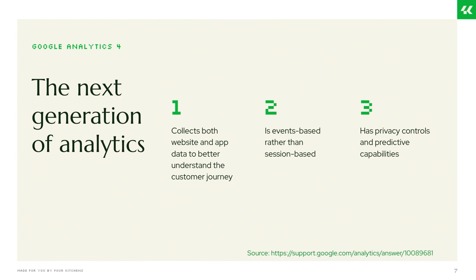Some key differences between Google Analytics 4 and the previous version: the new version — which Google calls 'the next generation of analytics' — can collect data about both websites and apps, which can help you better understand the customer journey. It's now events-based rather than session-based, meaning it tracks actions that users take on your site. And it has more enhanced privacy controls and predictive capabilities, driven by privacy regulations and the phasing out of cookies.